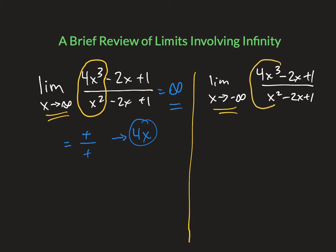We look at that end behavior model — in other words, just the leading terms. We reduce 4x cubed over x squared, which again acts like 4x. But this time we're putting in a really big negative number. When you plug a really big negative number into 4x, you get a really big negative number.